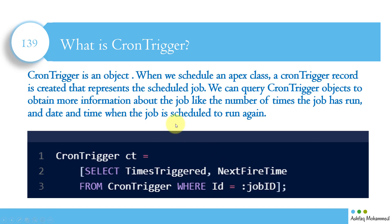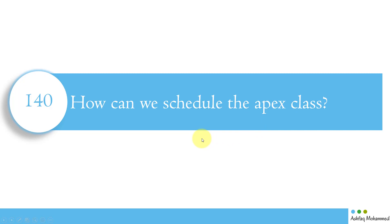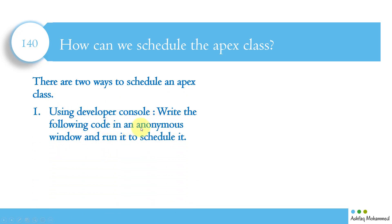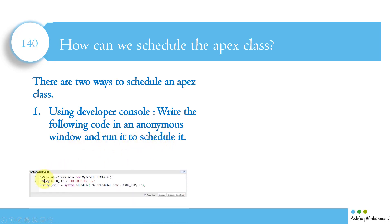How can we schedule the apex class? There are two ways. The first way is using the Developer Console: write the following code in an anonymous window and run it. Create an instance: MyScheduleClass sc = new MyScheduleClass(); then define a String cron expression, for example '10 38 15 6 ?', then call: String jobId = System.schedule('My Schedule Job', cronExpression, sc); — where the class instance is passed as one of the parameters.